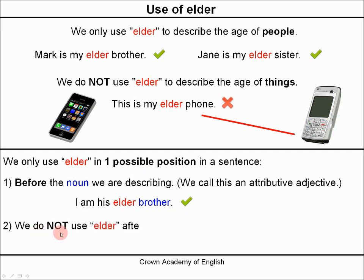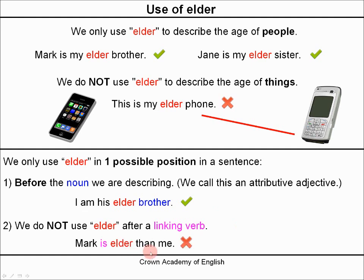And we do not use elder after a linking verb. For example: Mark is elder than me — no, this is wrong, we cannot do this. We must say Mark is older than me.